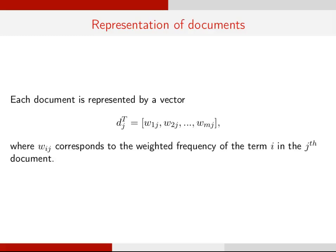The first step for text classification is to represent the documents by using suitable features. Each document is represented by a vector dj, where dj is equal to w1j, w2j, and so on till wmj. Here, wij corresponds to the weighted frequency of the term i in the jth document.